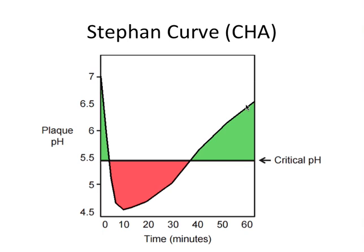We can modulate this recovery time and make it faster if we had more saliva. Chewing a sugar-free gum, like a xylitol gum, would stimulate saliva production in the mouth and actually cause the curve to return above critical pH faster. On the other hand, a patient with dry mouth or xerostomia would take well over an hour to buffer pH back to normal because they have less saliva and thus less bicarbonate.